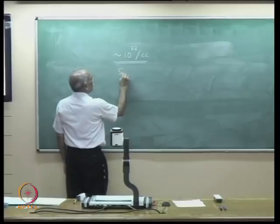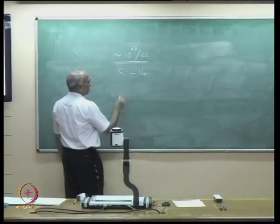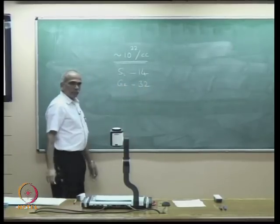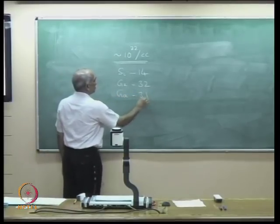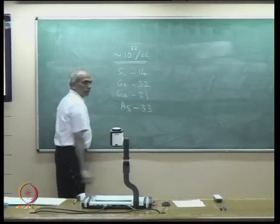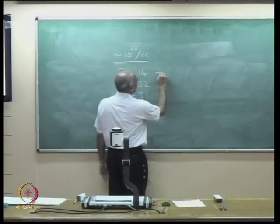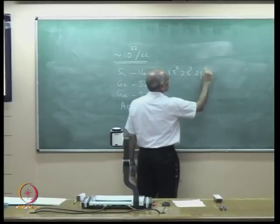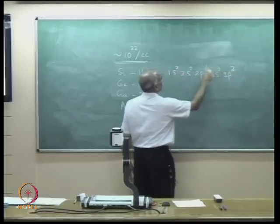If you take silicon, the atomic number is 14; germanium is 32; gallium is 31 and arsenic is 33. Writing the electronic configuration for silicon: 1s², 2s², 2p⁶, 3s², 3p². You can count: that is 14 electrons.